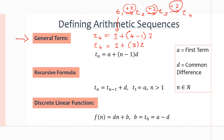So t4 equals 1 plus 3 times 2 equals 7. If we write out the sequence with first term 1 and common difference 2: 1, 3, 5, 7 — and indeed t4 is 7. The general term formula multiplies the common difference by the number of times you have to add it to the first term.